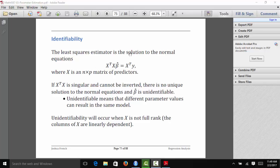From our normal equations, we know that our least squares estimator was the solution to the normal equations, X transpose X beta hat equals X transpose y, where X was our n by p matrix of predictors. But if X transpose X is singular and cannot be inverted, it actually means there's infinitely many solutions to the normal equations.